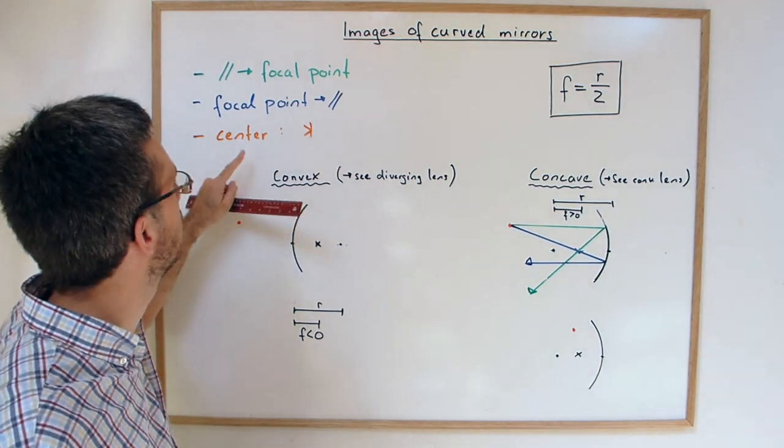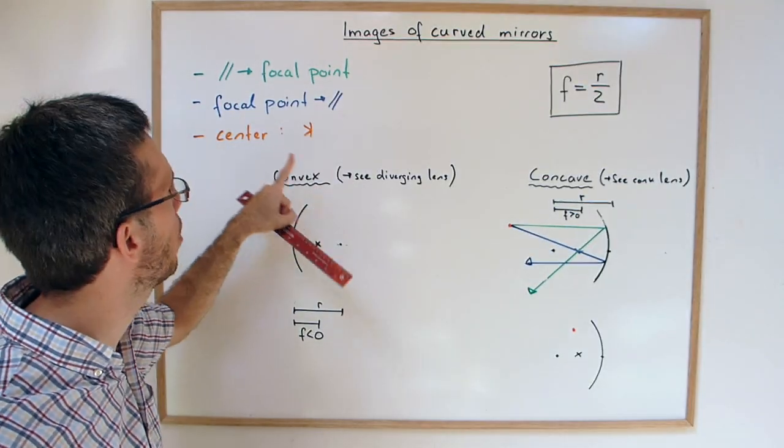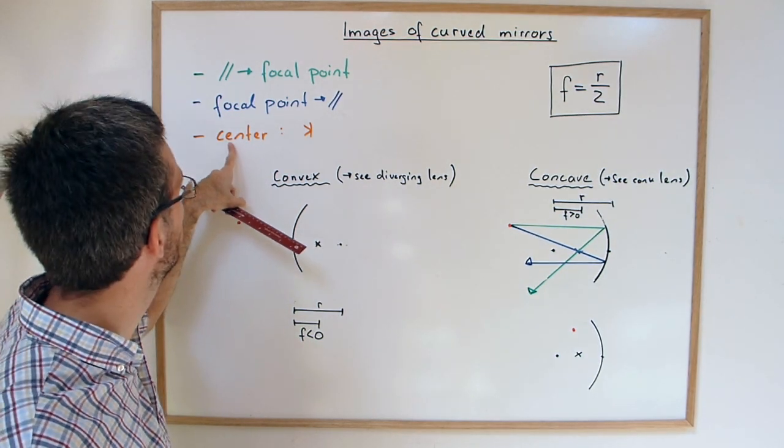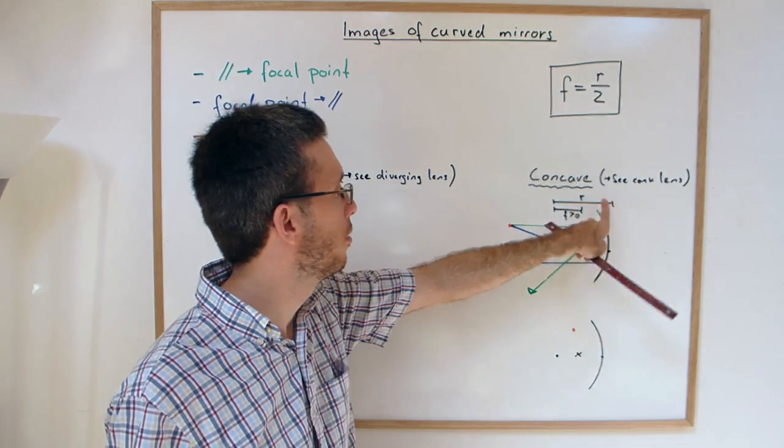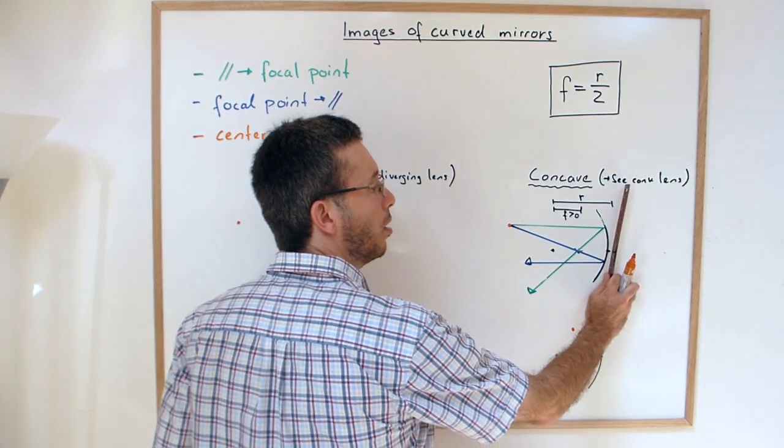It's a bit different from the lenses. In the lenses, the last one is the one that goes straight through, undeviated. Here the one that hits the center reflects as if there would be a plane mirror reflecting.